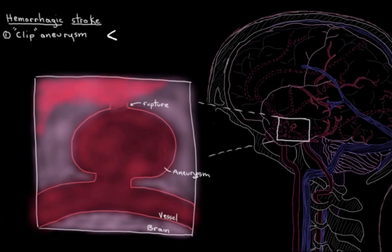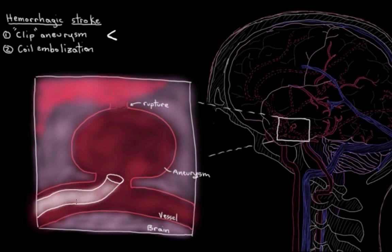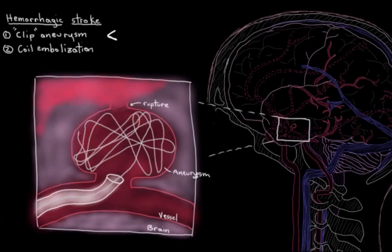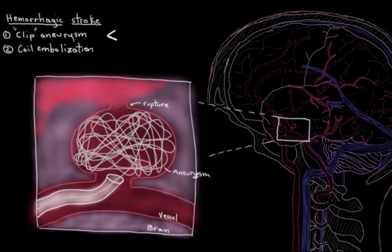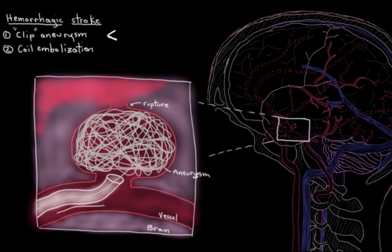Another procedure a neurosurgeon might do, and again this is in cases where a hemorrhage was caused by a burst aneurysm, is something called coil embolization. And in coil embolization, the surgeon will insert a little tube into the arterial system again. So it'll get threaded up into the cerebral arteries until it's basically right inside the aneurysm, right at the mouth of the aneurysm. And then this flexible little wire gets threaded in through the tube. And it starts to now coil up inside the dilated out part of the artery, the aneurysm here. And then more and more wire gets pushed in through the tube and into the aneurysm. And it just coils and coils and coils.